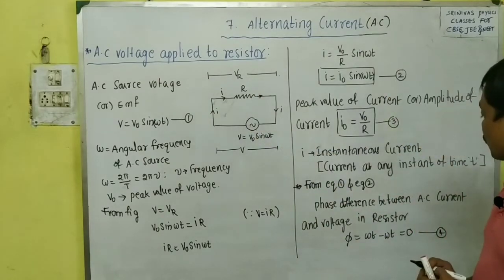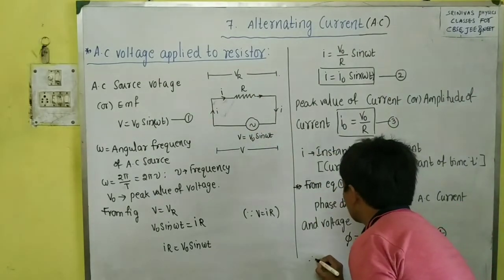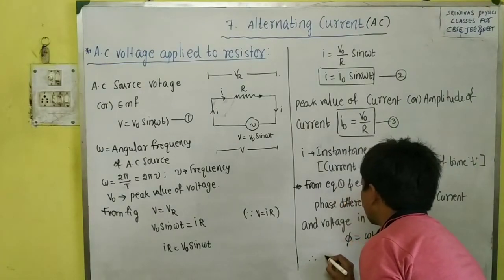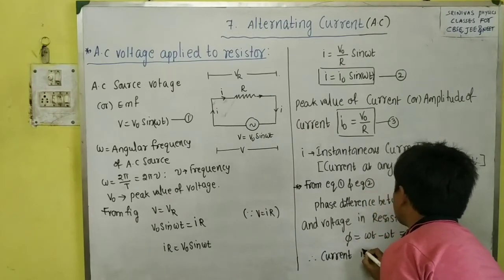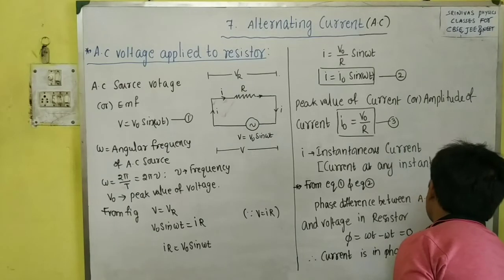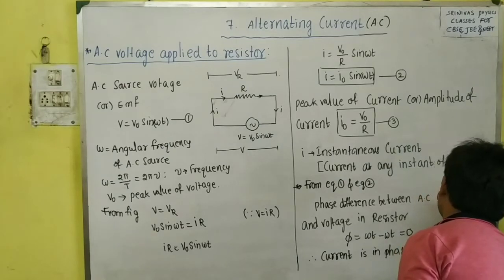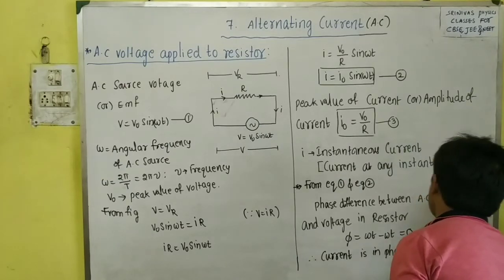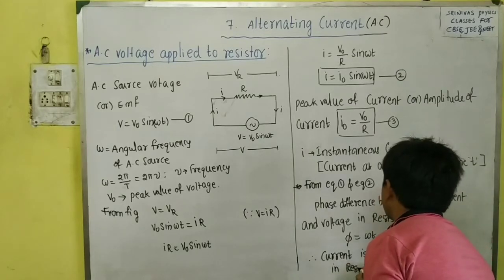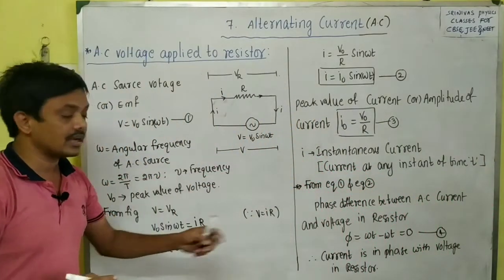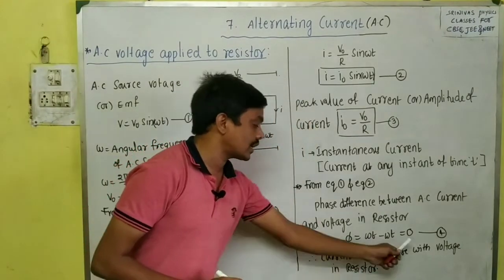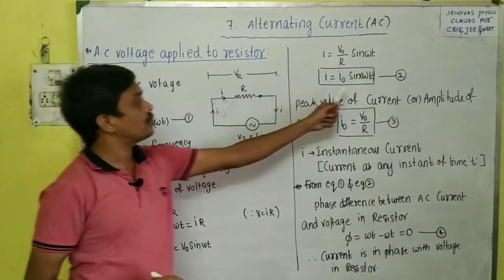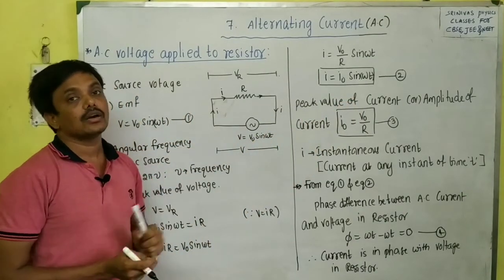When the phase difference is 0, we say that in a resistor the current is in phase with the voltage. The exam question may ask: show that the current is in phase with the voltage in a resistor. This means voltage and current have the same phase angle ωt when you connect the AC source to the resistor.